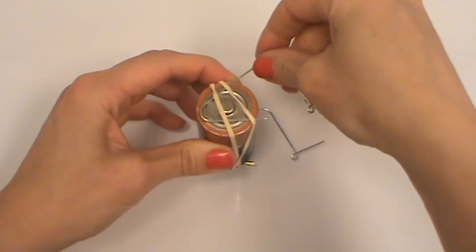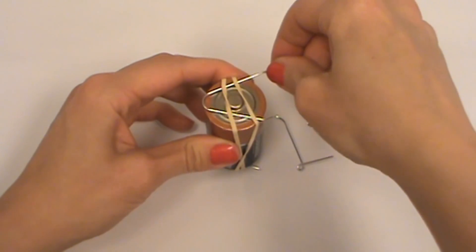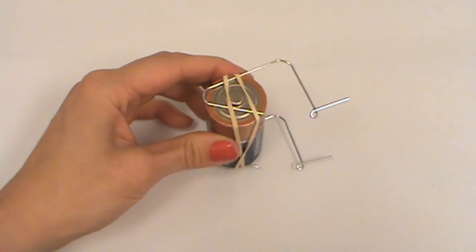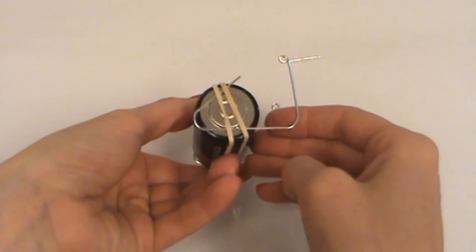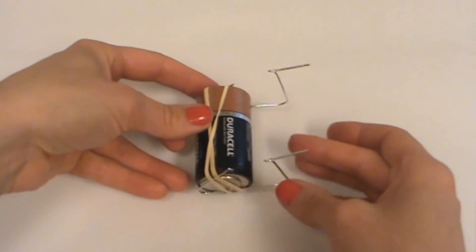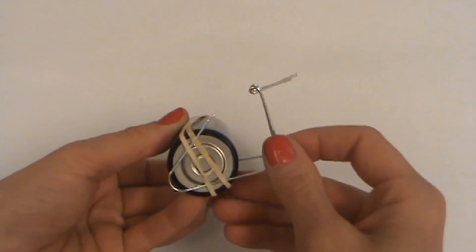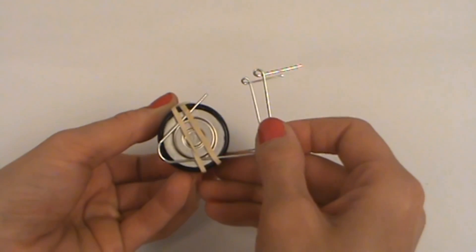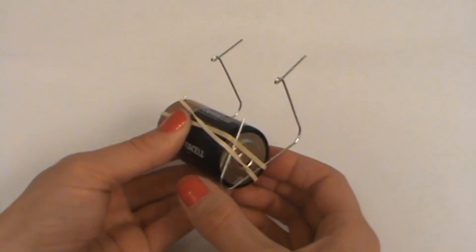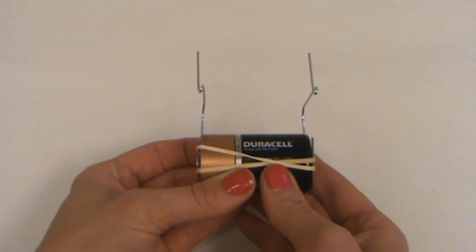Adjust the rubber band so that it's holding the paper clips firmly in place while maintaining contact with the battery ends. Now adjust the two paper clips so that they are the same on each side. These will form an axis for your wire coil to spin, so the more level and symmetrical that they are, the better your motor will perform.